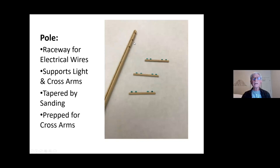So here's what the pole looks like. And it's of course the raceway for the electrical wires. And this is that groove that was cut down through there using my little table saw. And of course the pole not only supports the lighting bracket, but it supports the cross arms.